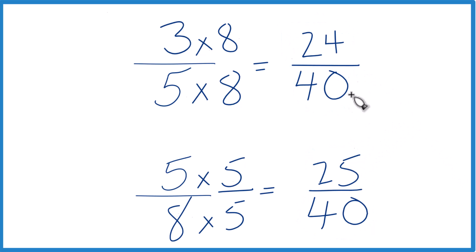So you can see 25 is greater than 24. So 25 fortieths is greater than 24 fortieths. Only by 1 fortieth, so not much, but it's still greater. And since these are equivalent here and here, we can say that 5 eighths is greater than 3 fifths by that 1 fortieth we found earlier.